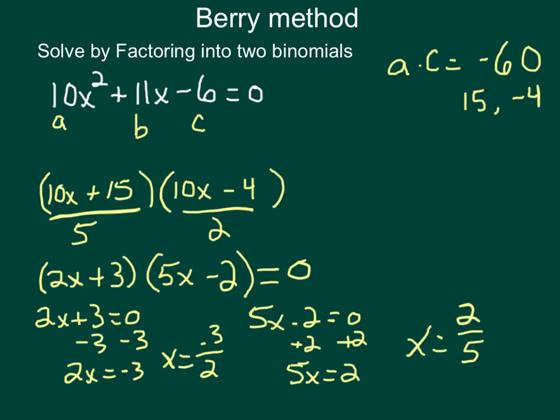So my answer in this one: x equals negative 3 halves and 2 fifths. The first step is to factor those, and when we factor them, we end up with our two binomials. Then we set each of them equal to 0 and solve.